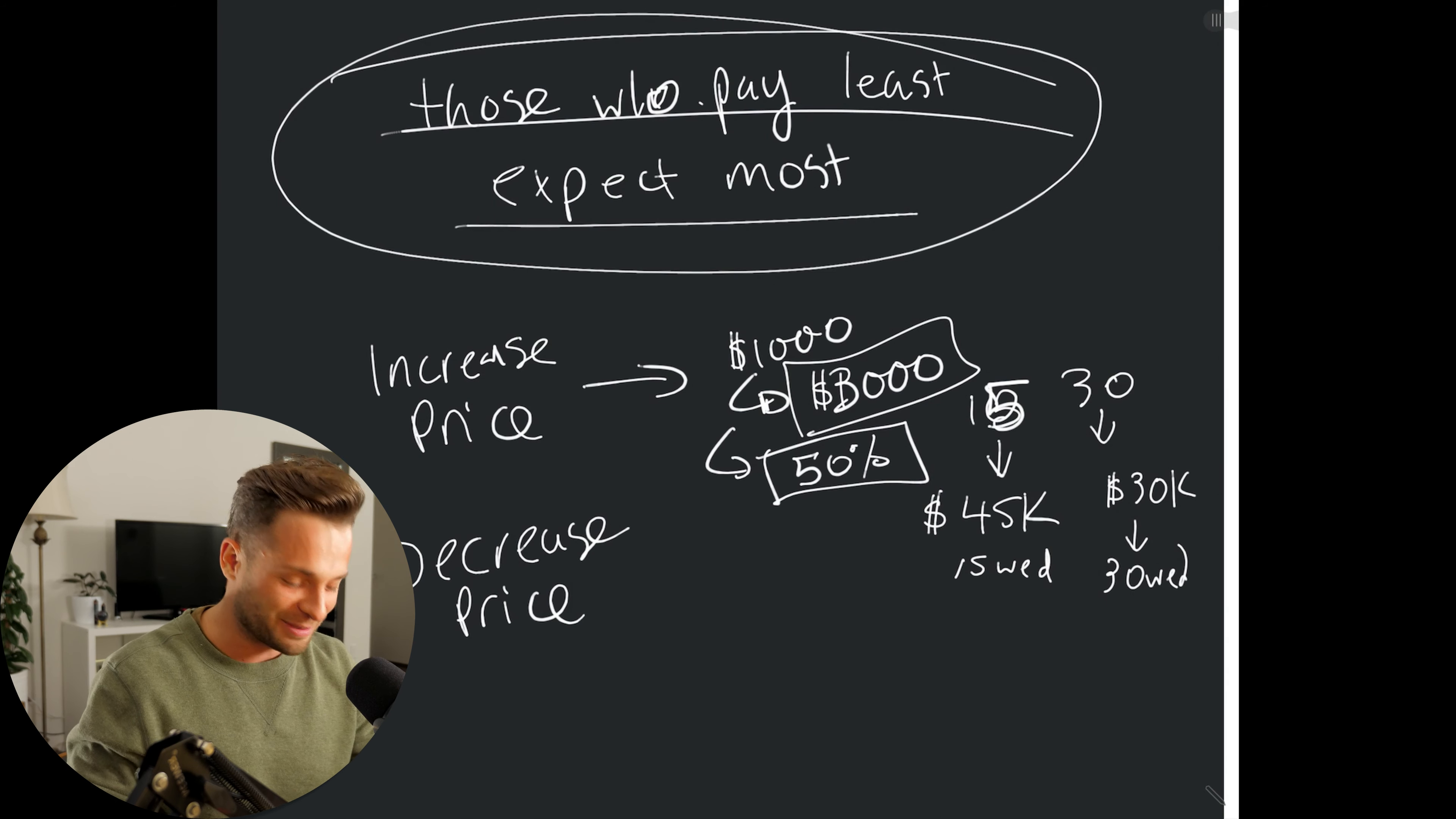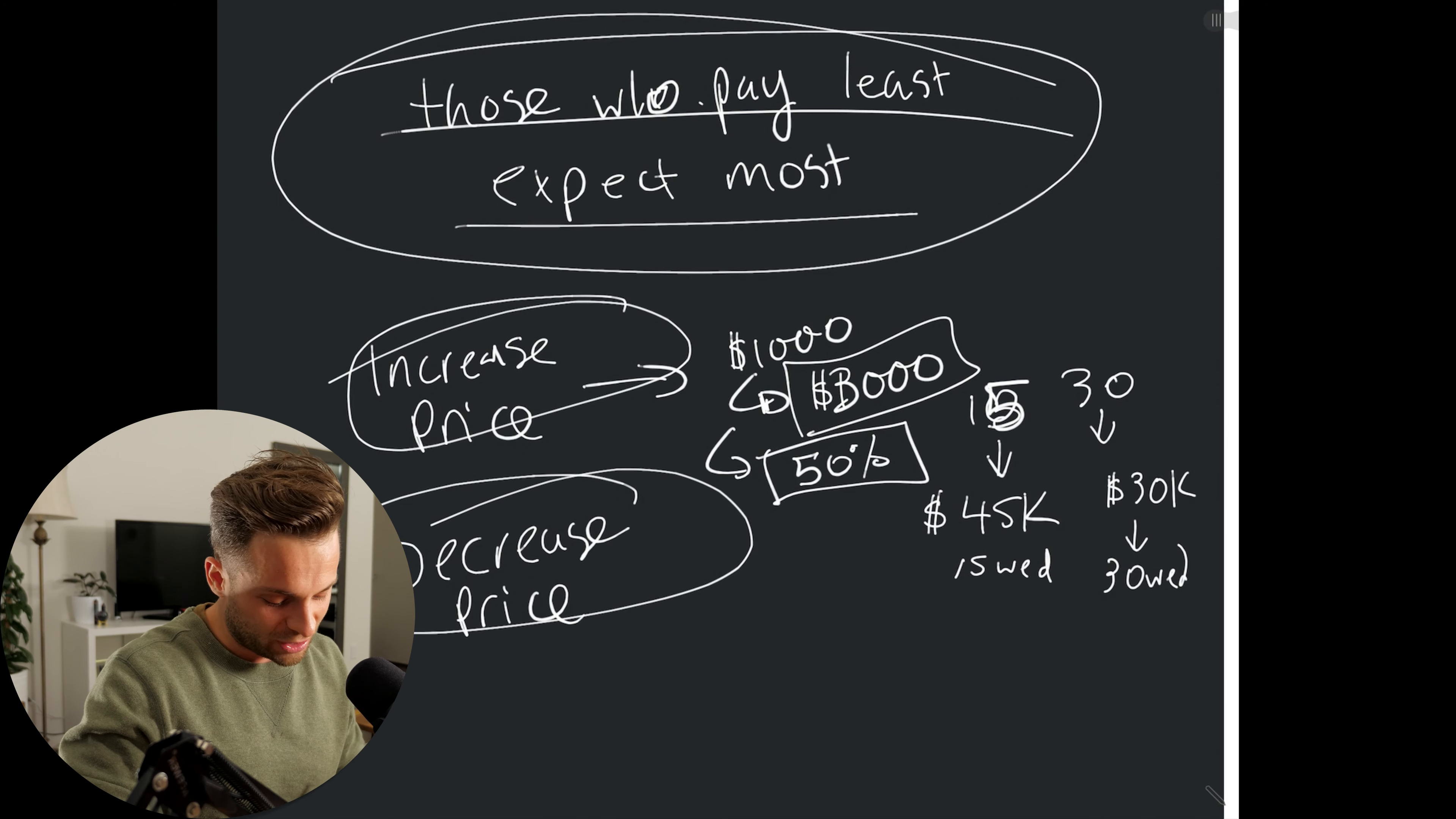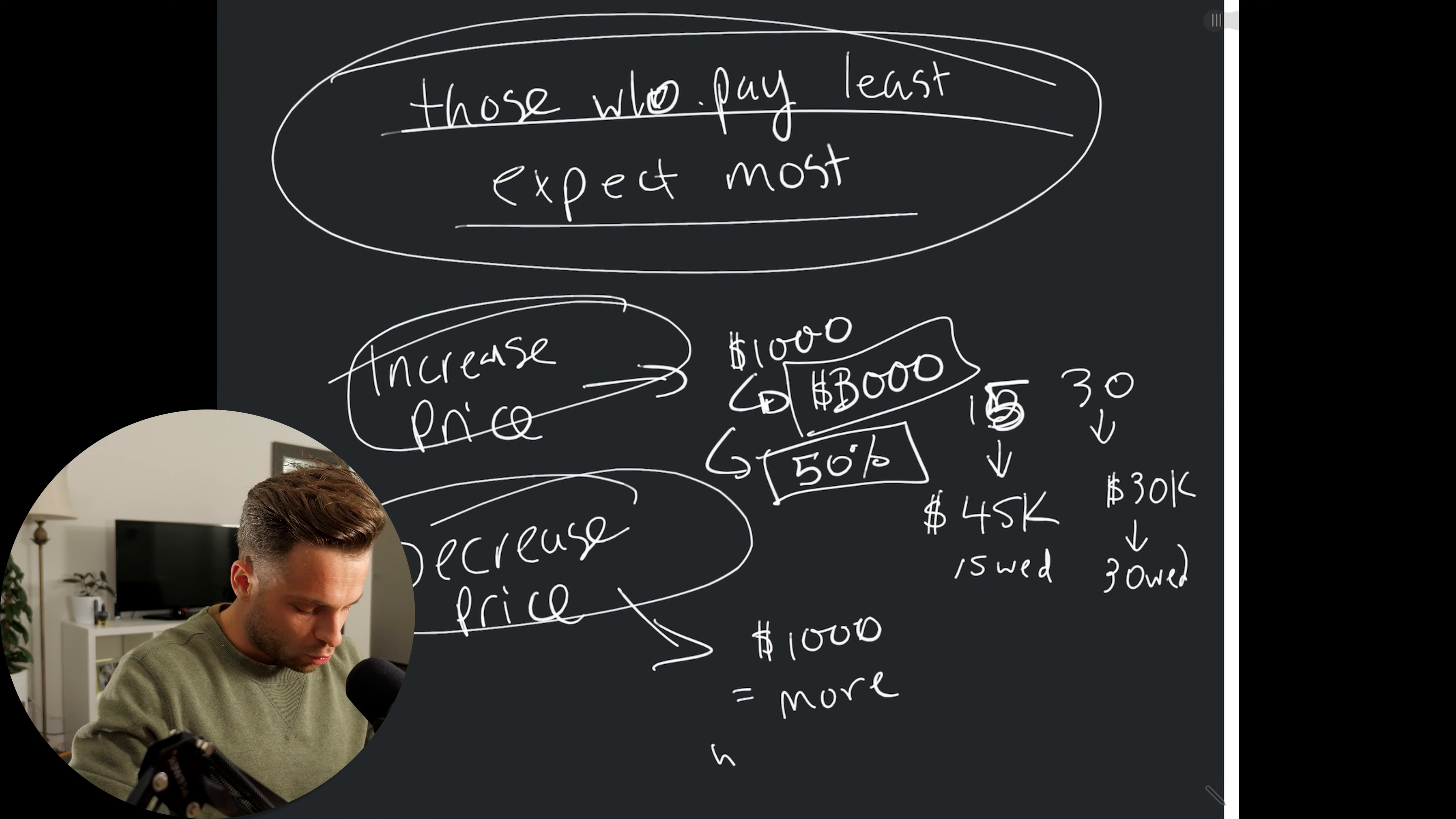Now, which Ryan in this situation do you think will be happier? The one who's shooting 15 weddings and getting paid 45 grand? Or the one who's doing twice as much work and making, what is that, 15 grand less? Significant.